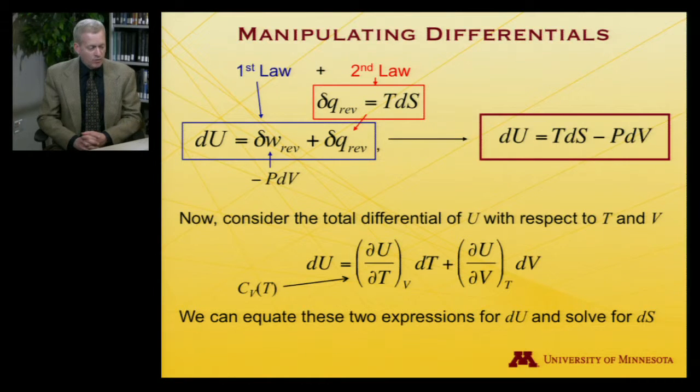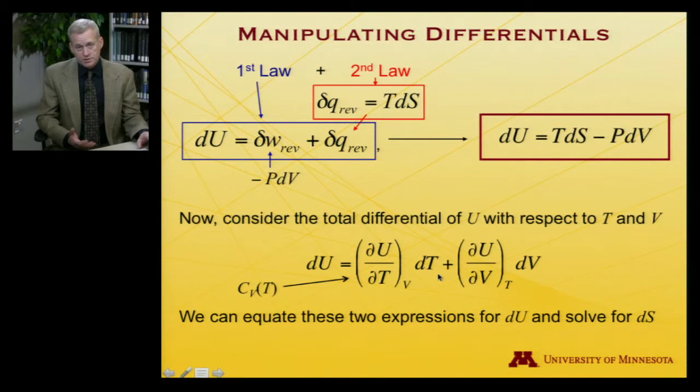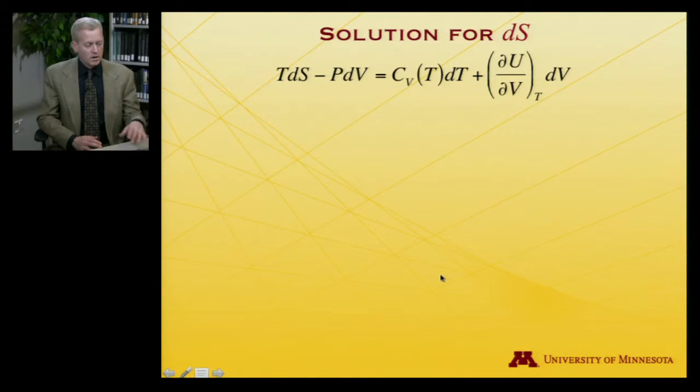And so if I now equate these two expressions for dU, so I have the one I derived from the first and second law, and I have this other one, which is just expressing the total differential of U. And I'll put that up on the next slide. I have that TdS minus PdV is equal to Cv dT plus (∂U/∂V) dV.